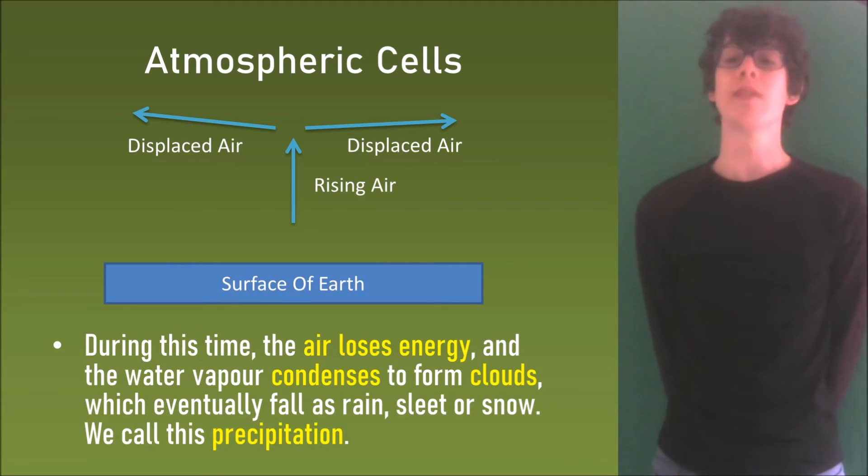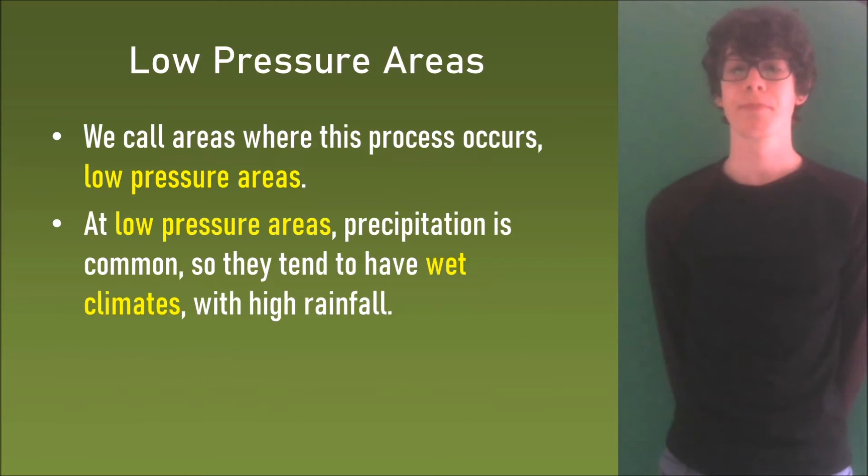During this time the air loses energy and the water vapor condenses to form clouds which eventually fall as rain, sleet or snow and we call this process precipitation. We call areas where this process occurs low pressure areas. At low pressure areas precipitation is common so they tend to have wet climates with high rainfall.